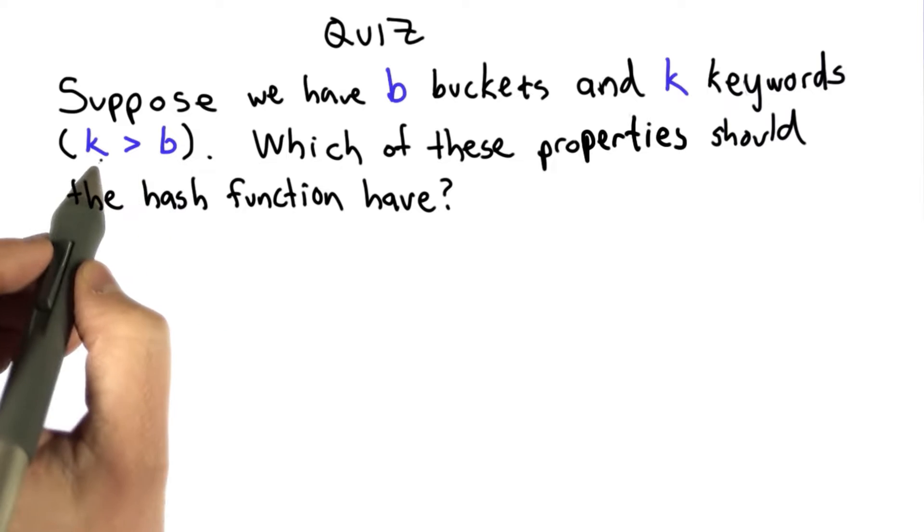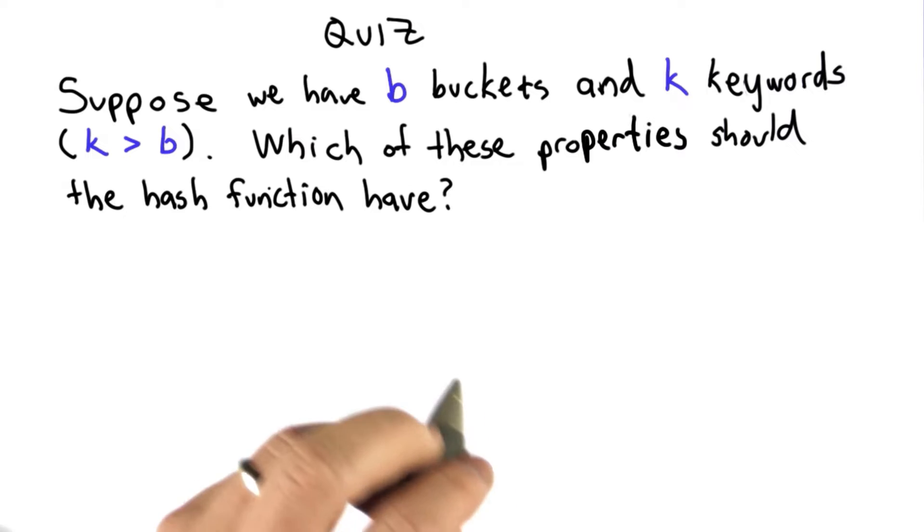and we should assume that k is much greater than b, that there are more keywords than we have buckets. The question is which of the properties should the hash function have.